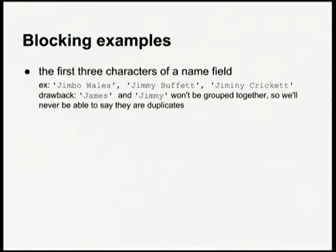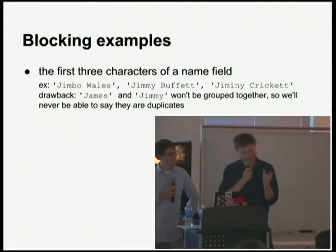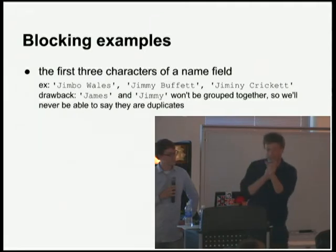The first blocking example is the first three characters of a name field. For example — Jimbo Wales, Jimmy Buffett, and Jiminy Cricket — the first three characters of each one is J-I-M, so we're going to only compare those to each other. We're not going to be comparing Jimbo Wales to Austin Martin, which is good. But the flip side is we're also not going to be comparing Jimmy Buffett to James Buffett, because that's not what the rule is.